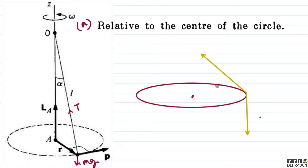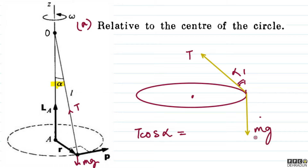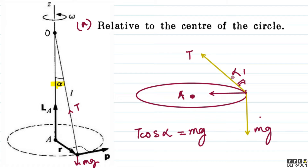From the redrawn diagram, the angle is alpha. The vertical component of tension T cos alpha balances mg. The horizontal component T sin alpha provides the required centripetal force. Now, considering torques about the center of the circle: T sin alpha passes through that point (zero torque), while T cos alpha and mg produce torques about it.